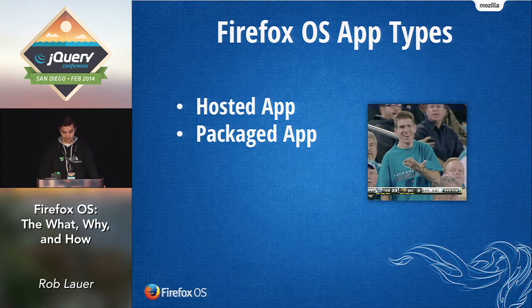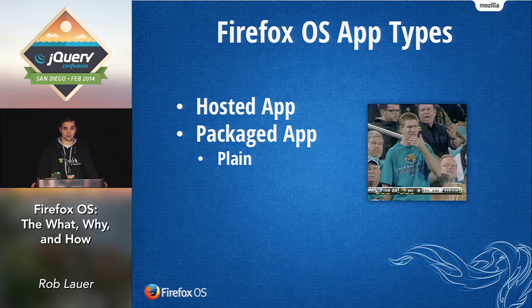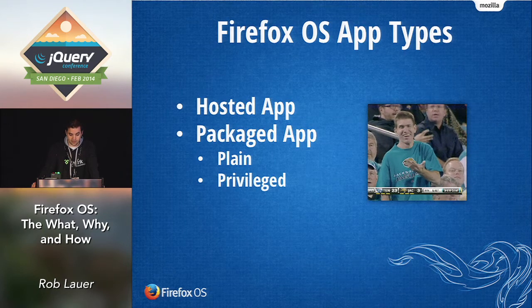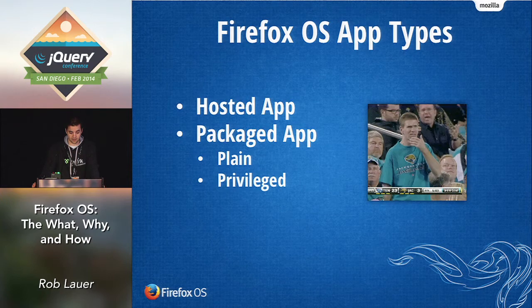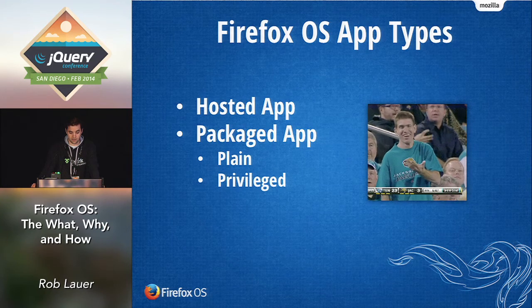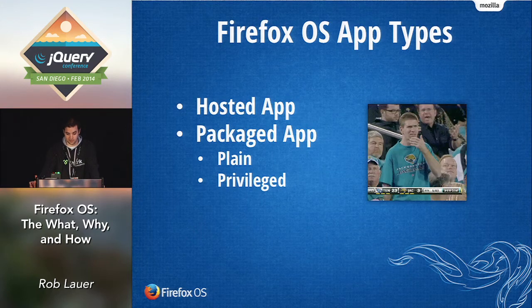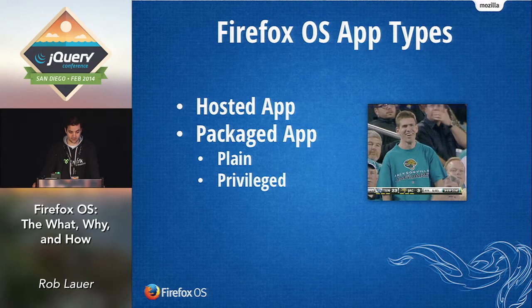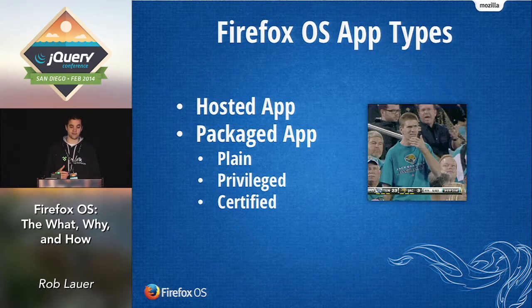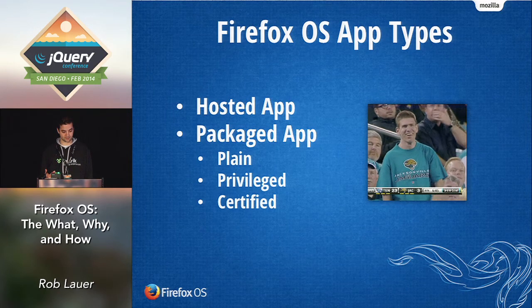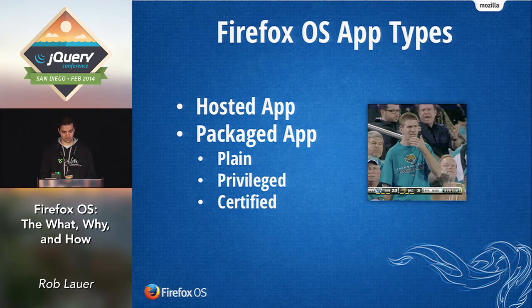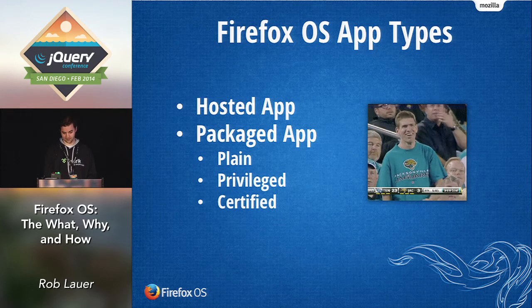There are three different types of packaged apps. First is a plain packaged app, basically what I just described. We also have a privileged packaged app, which requires access to privileged APIs — this type must go through a review process like the iOS and Android app stores. Examples of privileged APIs would be contact manager or device storage. Finally, we have certified packaged apps, which provide a core function to the device — like a new web browser or a contact manager. The vast majority of us will never write a certified packaged app, and Mozilla doesn't even allow third parties to develop certified apps yet.